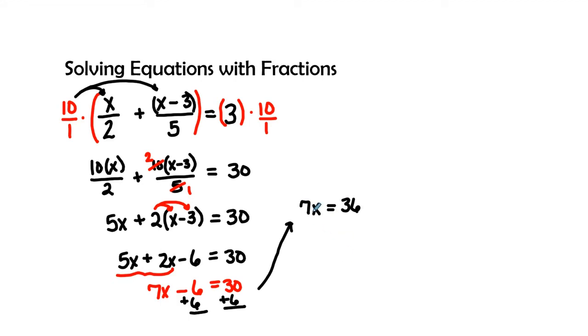Going ahead and getting rid of that coefficient because it's attached to a multiplication, so I'm going to divide by 7 on both sides. Therefore I'm going to have x by itself and my final answer is going to be 36 over 7. Go ahead and keep your answer as a fraction.